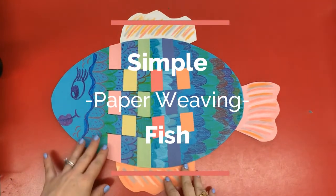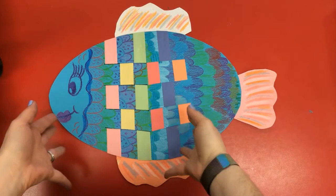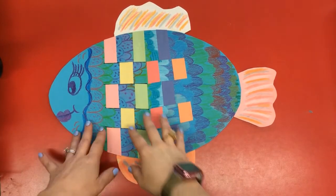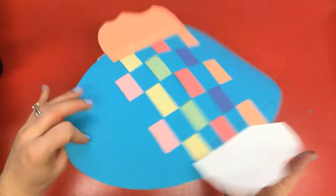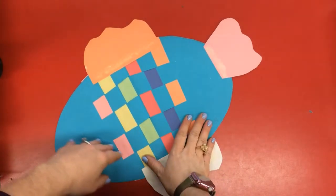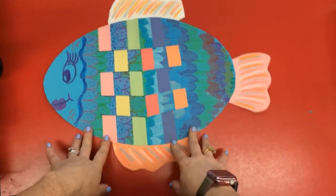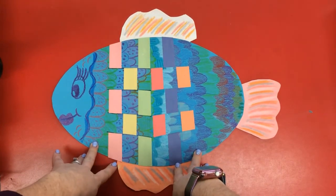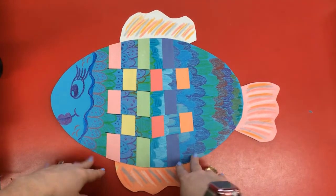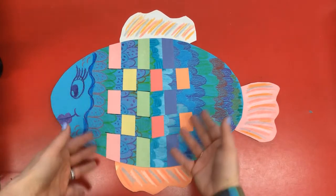All right, so today we're going to be working on making these awesome fish that are paper weaved. As you can see on the back it looks like a placemat with the paper and things glued on. We've read the book There's Only One You and we looked at a lot of different patterns and the use of color.